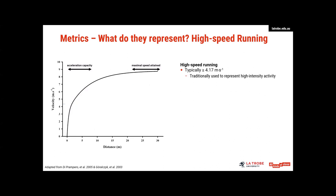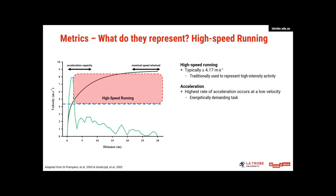So the next metric I want to talk about is high-speed running. Again, I've just picked the arbitrary threshold here of around about 4.17 metres per second. So what this means is high-speed running, again, is anything above the line. Now, as I mentioned earlier, traditionally, high-speed running was used to represent high-intensity activity. However, if we start to look at acceleration, we know that the highest rate of acceleration can occur at a low velocity. We also know that accelerating is an energetically demanding task.